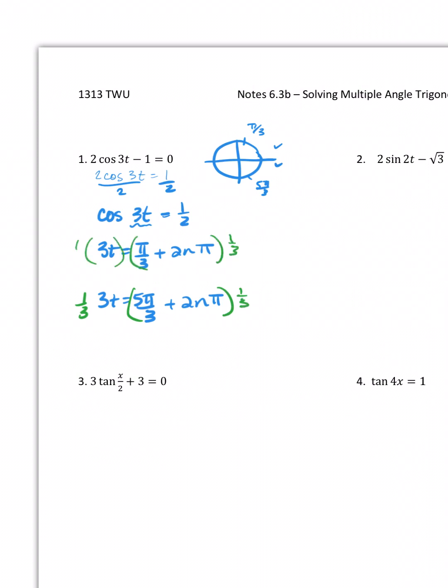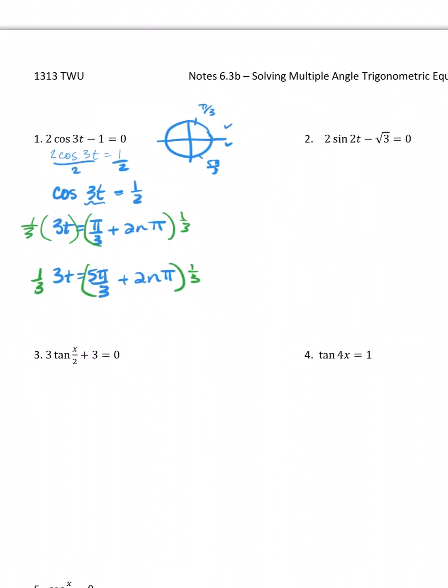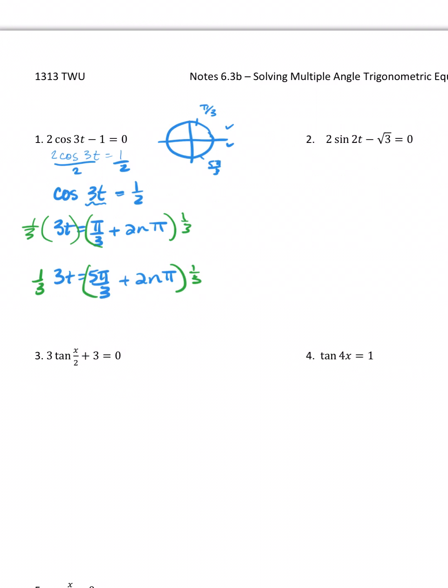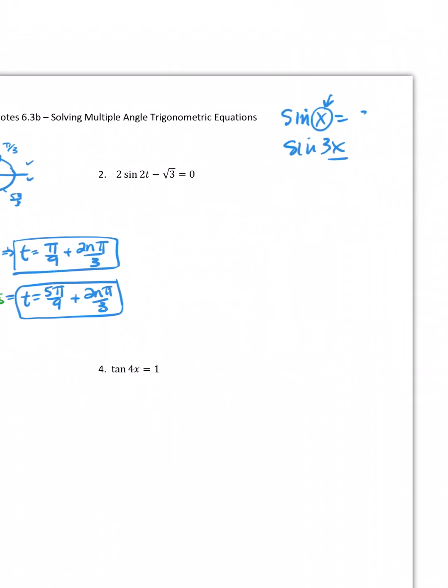All right, and let's see what this does to our answers. So now my answer is going to be, this becomes t equals pi over nine plus two n pi over three. So there's one of my solutions. That's okay. Looks weird, but it's okay. Same thing here. t is going to equal five pi over nine plus two n pi over three. So there's a little bit of an extra step here. Not impossible. We can do this.